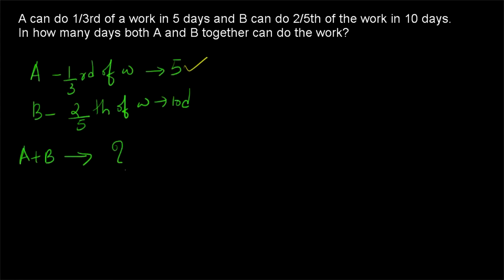Here A is taking five days and B is taking ten days. If we take the LCM of five and ten, that is ten, then A would be doing one-third of ten, which leads to some confusion. So instead, we take a common multiple of five and ten which is also a multiple of three, to keep calculations simple. After doing more problems this will come automatically. So we take the total number of chocolates as thirty — a common multiple of five, ten, and three.